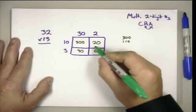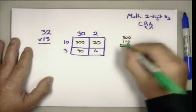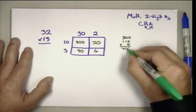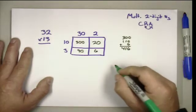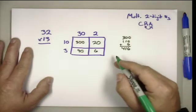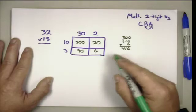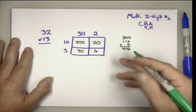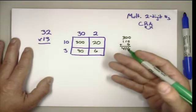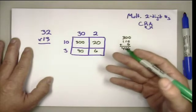Then we can add up these partial products, which gives us three hundred, one ten when I add the ninety and the twenty, and six, giving us four hundred and sixteen. So that was one way to multiply 32 and 13 using a representation. How are we going to connect this model to the algorithm?